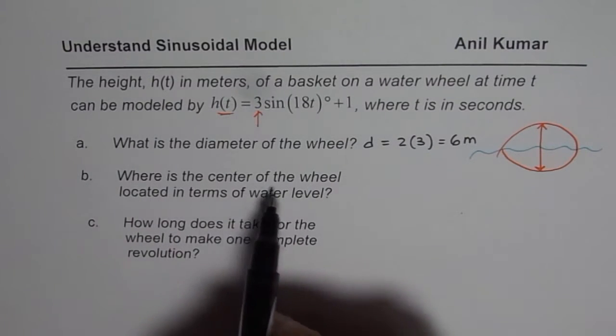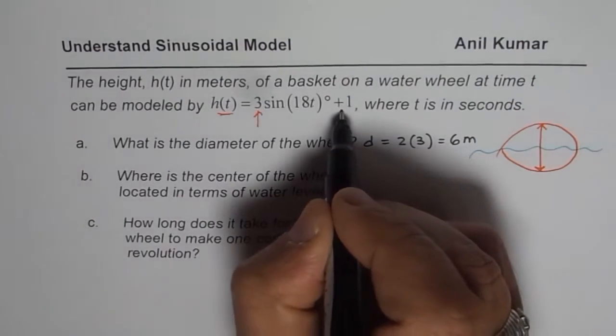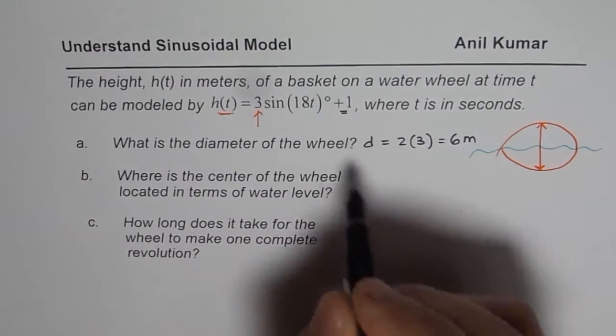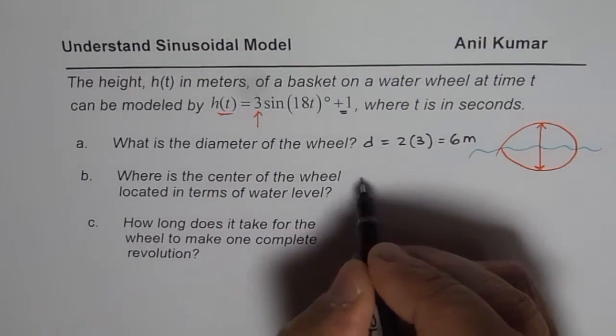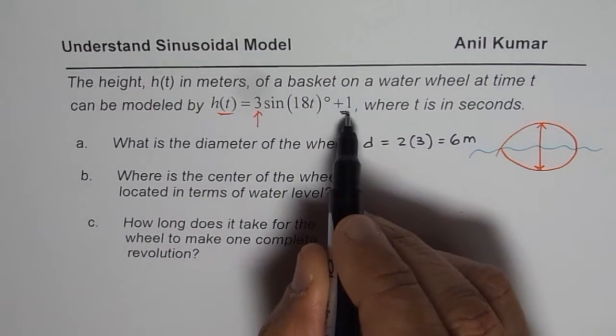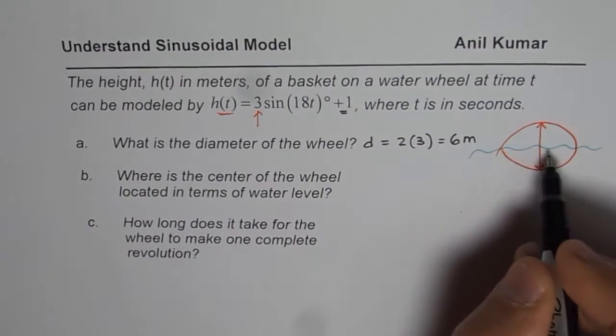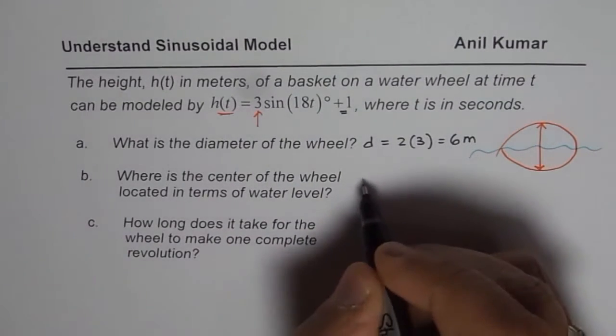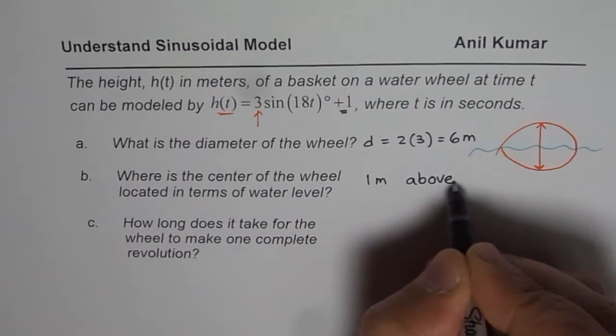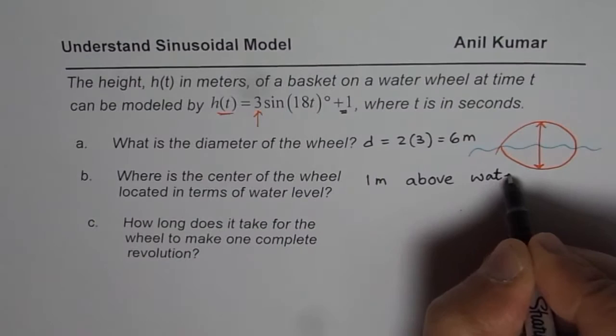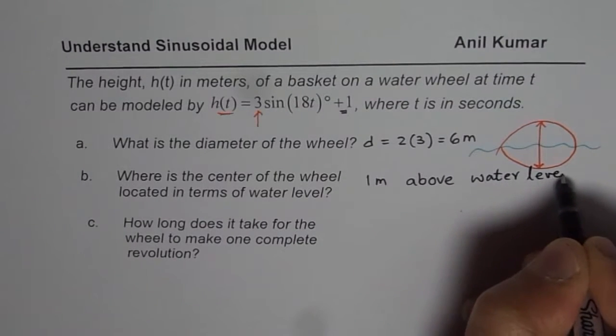Part B is, where is the center of the wheel? Plus 1, the value indicates the center or the axis of the wheel. So we will say the center of the wheel is at 1 meter and this 1 meter is above the water level. So it is 1 meter above water level.